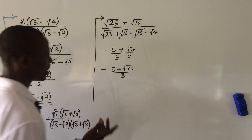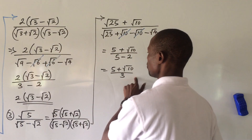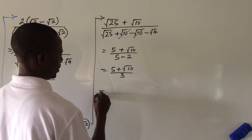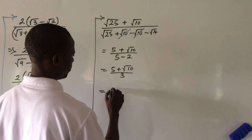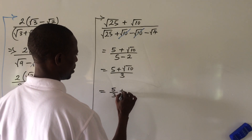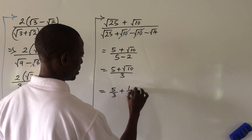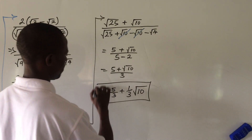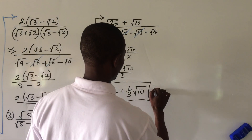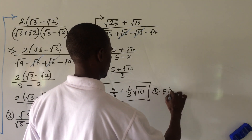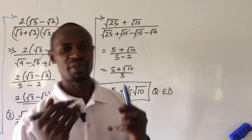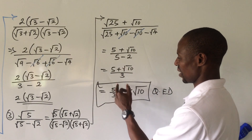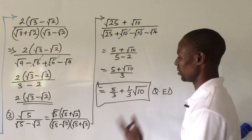The question says we should express it in the form a plus b root ten. So we split this to get 5 over 3 plus 1 over 3 times root ten. QED. That is the answer to this challenge. Our A is 5 over 3 and B is 1 over 3.